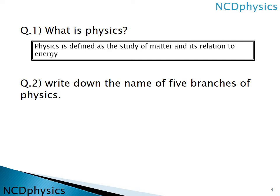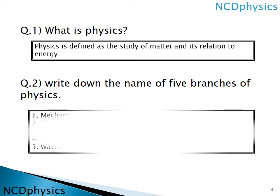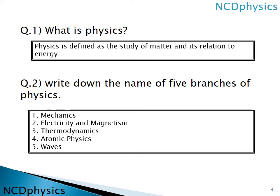The next question is: write down the names of five branches of physics. As you know there are so many branches, but we need to write five of them. The five branches are: mechanics, electricity and magnetism, thermodynamics, atomic physics, and waves. There are many others, but these five can be mentioned here.